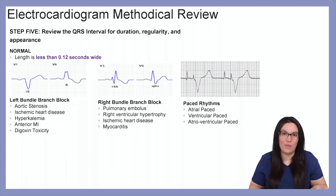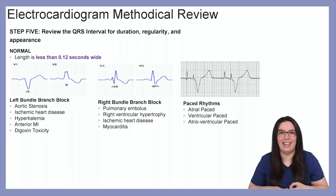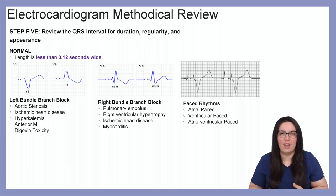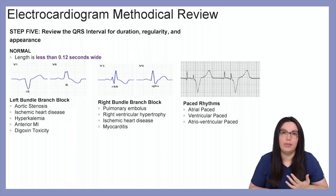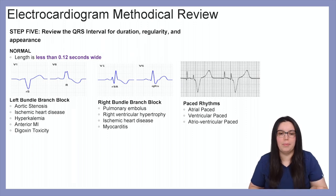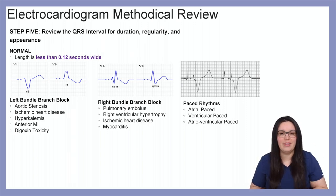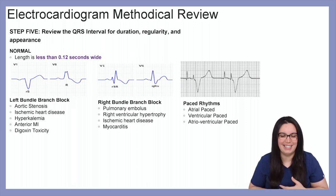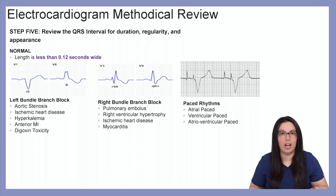Step five: review the QRS interval for duration, regularity, and appearance. A normal length is less than 0.12 seconds. When the QRS complex becomes wider, we need to determine if it is a left bundle branch block, a right bundle branch block, or a paced rhythm. With a left bundle branch block, you'll see a singular deflection — either positive or negative — and causes include aortic stenosis, ischemic heart disease, hyperkalemia, anterior myocardial infarction, or digoxin toxicity.